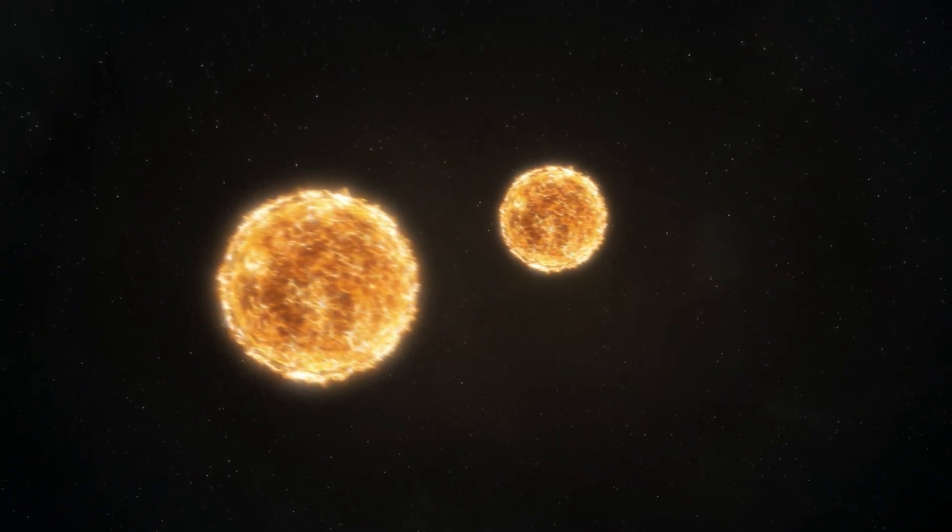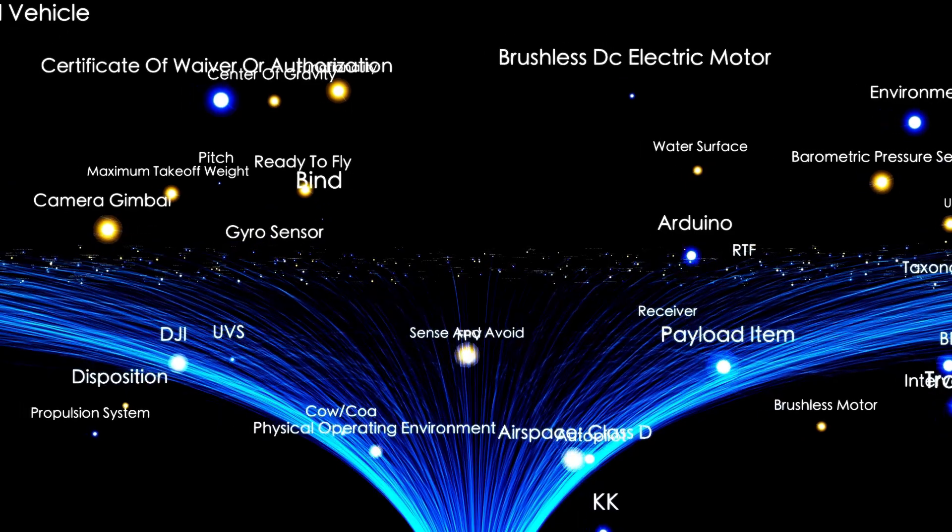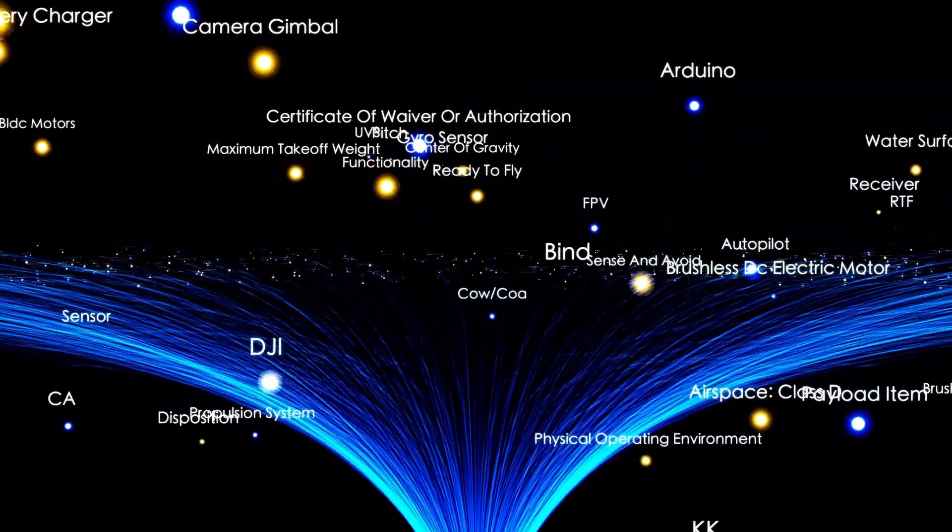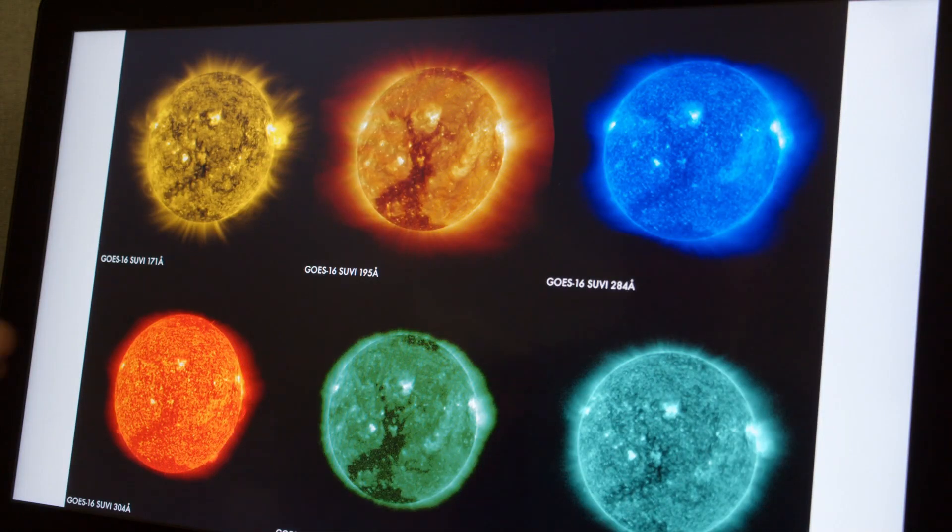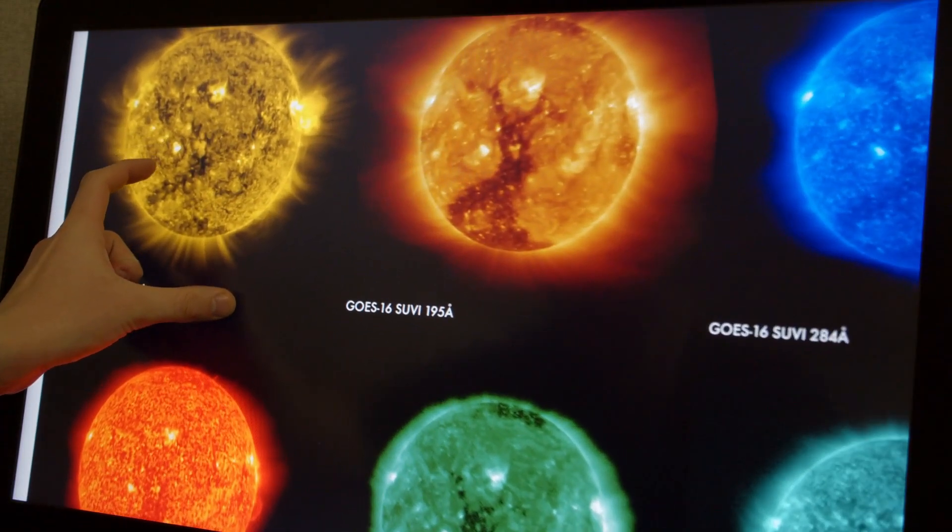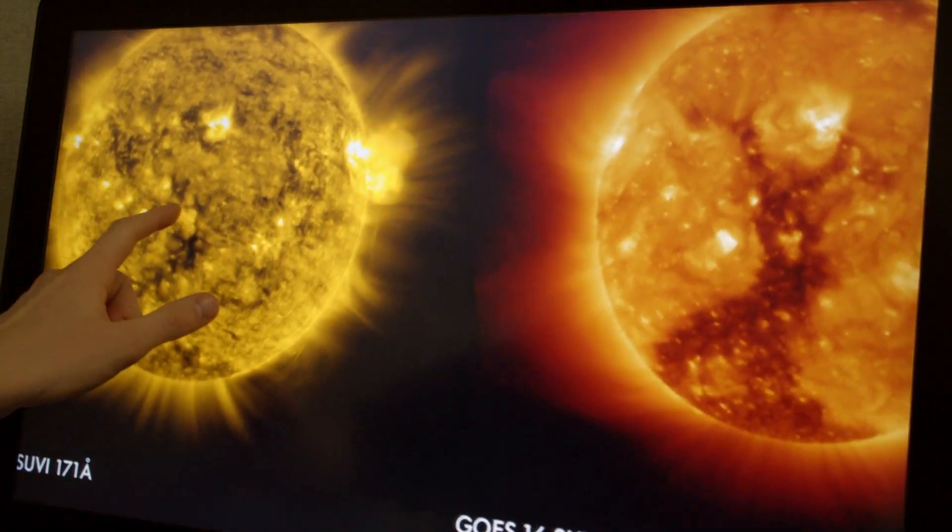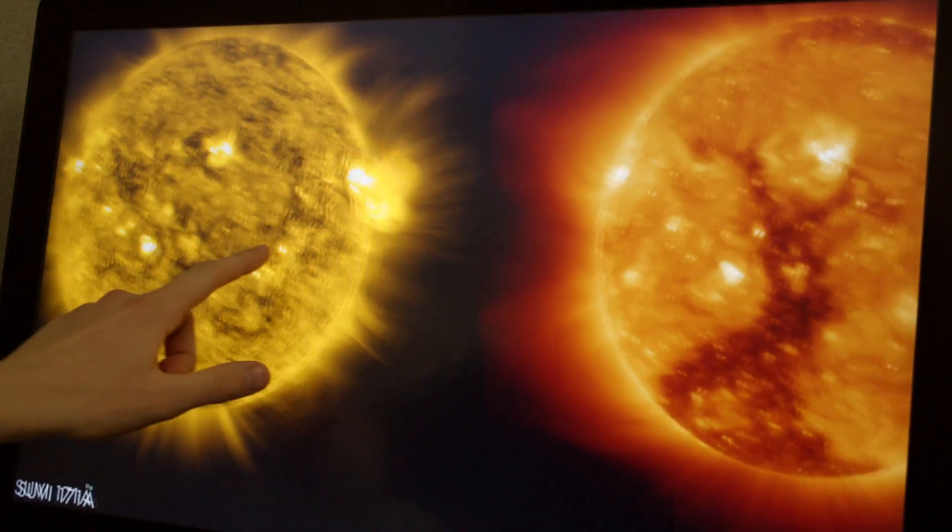Betelgeuse, one of the largest stars in the firmament, has begun to show signs of instability, trembling alarmingly, which could indicate that something frightening is happening. This star has been the subject of study because of its gigantic size.